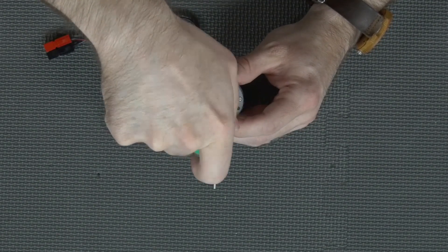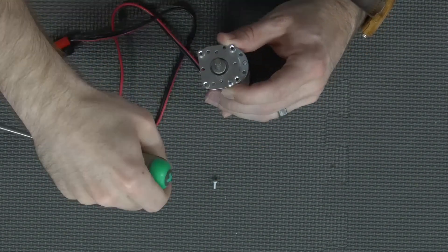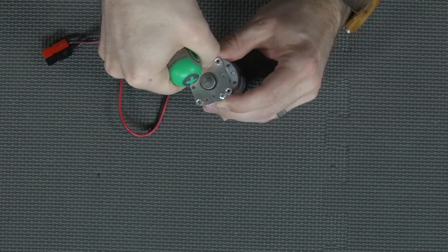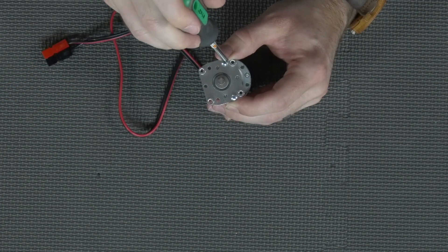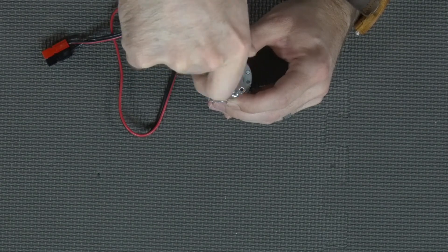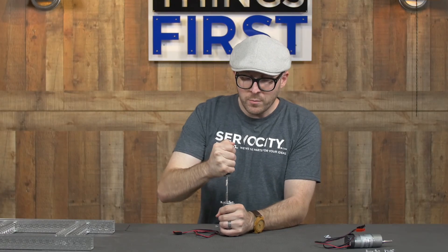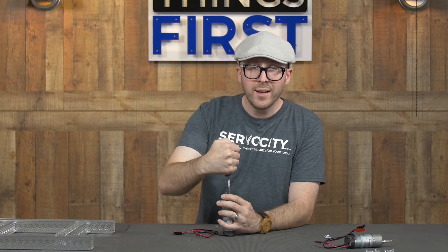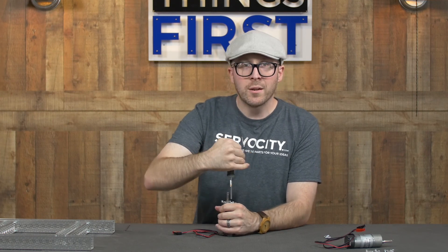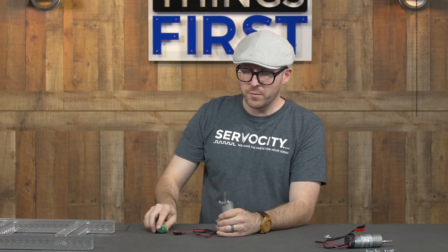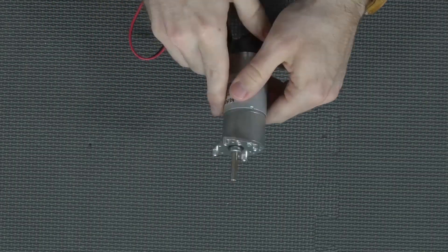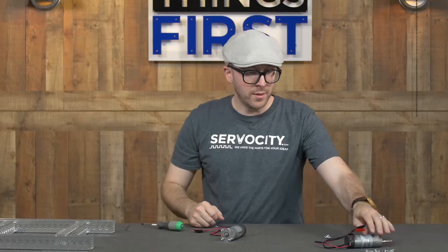I'm going to take a Phillips screwdriver and tighten that down. You want to make sure that these are as tight as you can get them without stripping out your screws. I'm going to go ahead and do the same thing to the other motor.